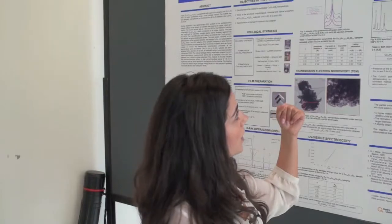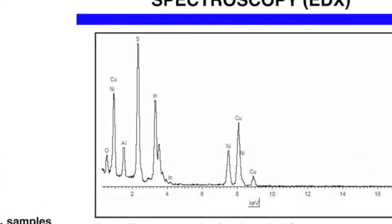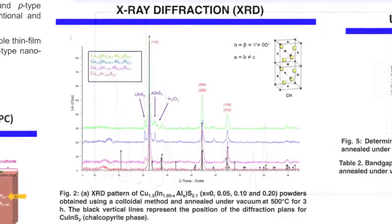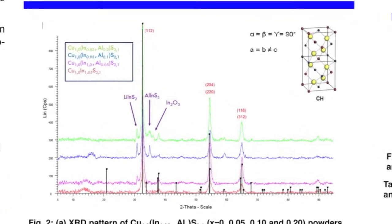We can see here for the energy dispersive X-ray spectroscopy that we have the four elements. We've had a little bit of oxygen and it is also visible here in the X-ray, we have indium oxide.